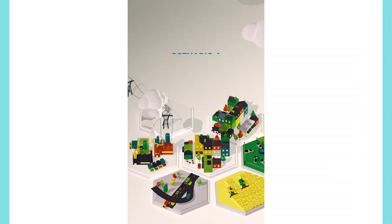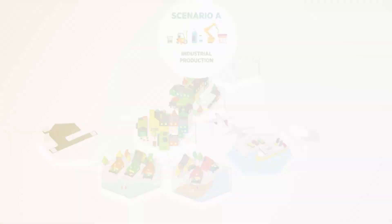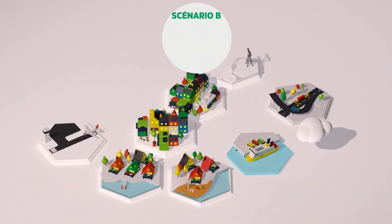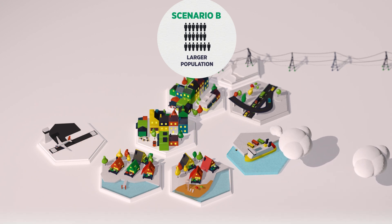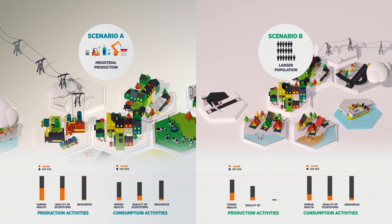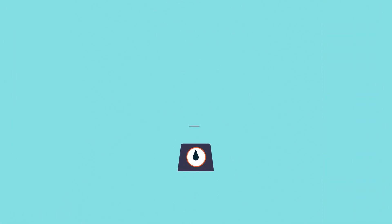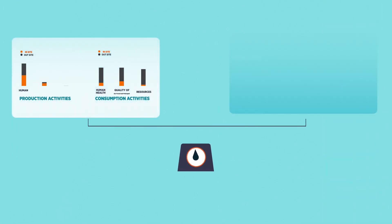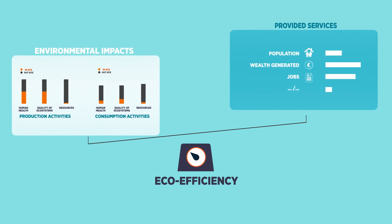These scenarios allow for the generation of wealth, employment or accommodation of populations at different levels. Scenario A reinforces the industrial activity of the territory, while Scenario B allows for a larger population to settle in. It is necessary to take these services into account when assessing the environmental performance of the scenarios. For each scenario studied, we therefore quantify an eco-efficiency, i.e. a ratio between the services provided and the environmental impacts. The idea is to identify the scenarios that provide the most services for each unit of impact.